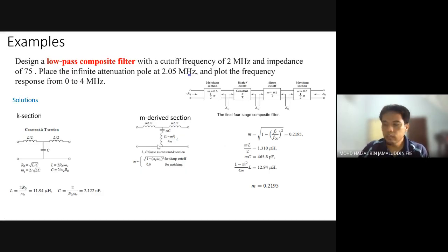For example, we have a low pass filter with a cutoff frequency of 2 MHz and impedance of 75 ohms. Place the infinite attenuation pole at 2.05 MHz and plot the frequency response from 0 to 4 MHz.